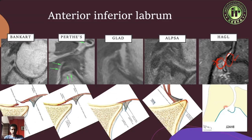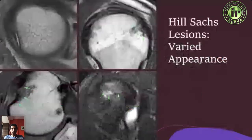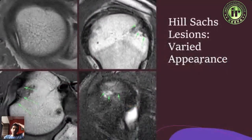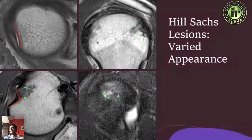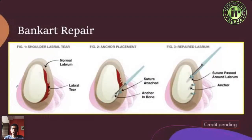On the humeral side, you can have flat or hatchet-shaped Hill-Sachs lesions — essentially flattened or wedge-shaped depressions. Initially, surgeons started fixing soft tissue Bankart lesions arthroscopically and thought they'd cured everyone, but patients kept having recurrent dislocations.